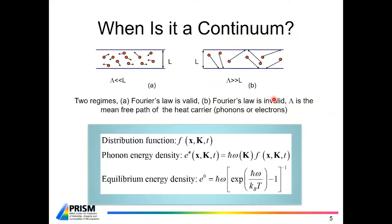That regime is described by a distribution function of phonons, f, which is as usual a function of space x and time t, but also another variable called the wave vector k. So that's a phase space. This is a distribution function — the number distribution function.